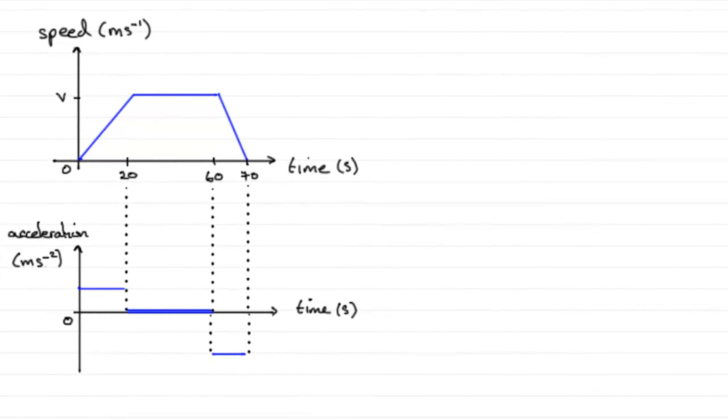Now, in this last part of the question, we're told that the total distance moved by the car is 880 meters and we're asked to find the value of V here.